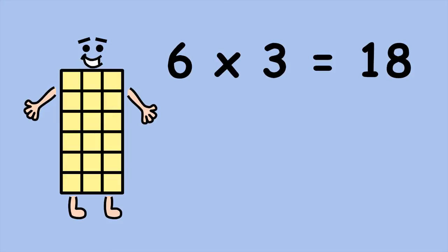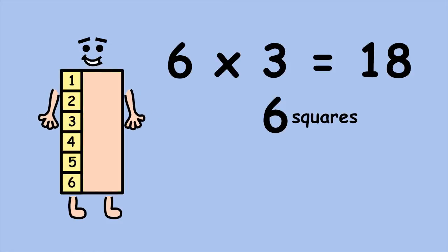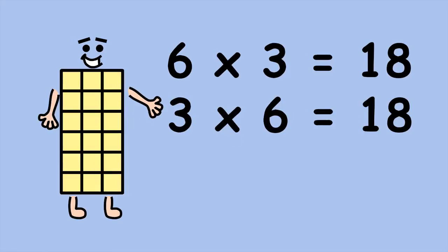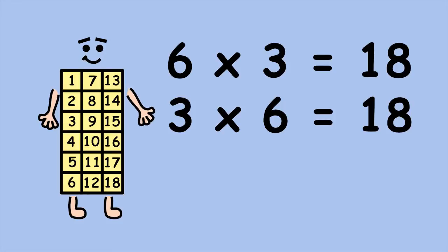If you don't like counting rows, you can count columns instead. There are six squares in a column. Now, how many columns are there? 3. 3 groups of 6, or 3 times 6, equals 18. Either way, you get the same answer.